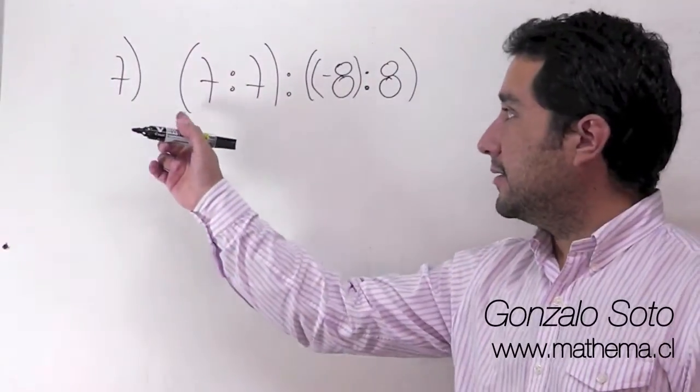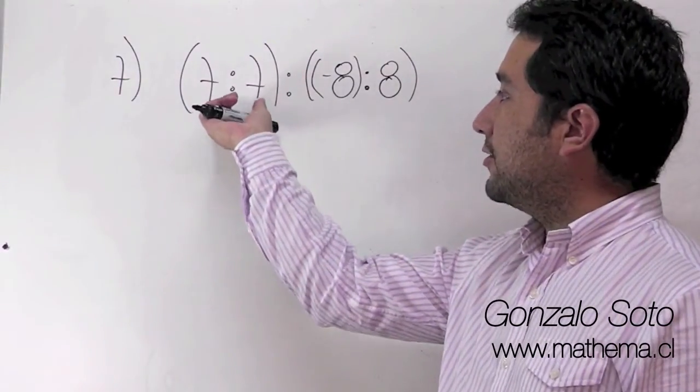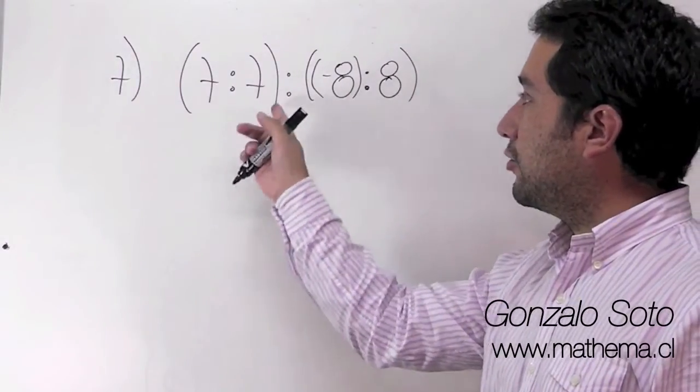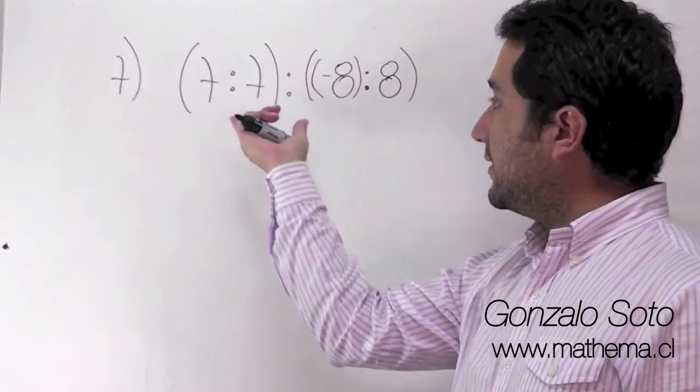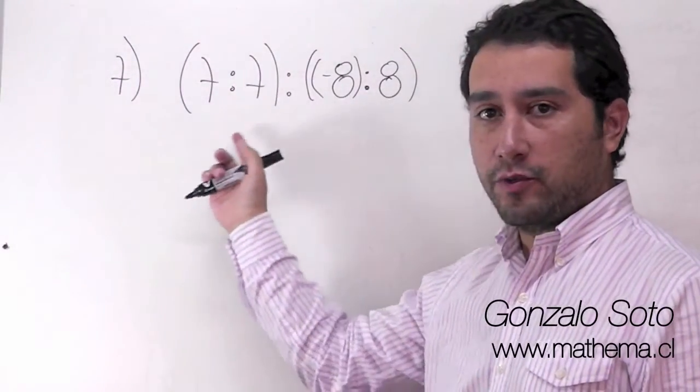En el ejercicio 7, fíjense lo que tenemos. Tenemos un paréntesis con una división, luego otro paréntesis con otra división y una división que divide estos dos paréntesis. Entonces vamos a resolver este paréntesis y resolver este paréntesis, y luego vamos a hacer la división de los dos resultados.